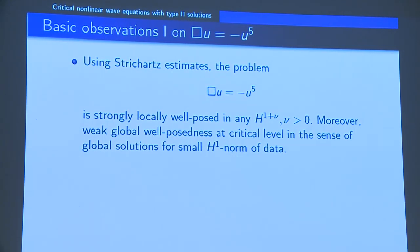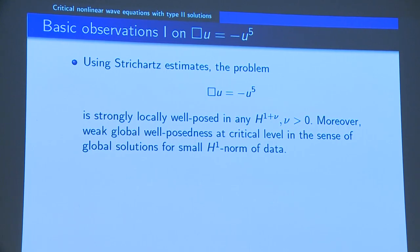More precisely, it is strongly well-posed in H^{1+} for any positive epsilon, in the sense that you can indicate a time interval whose length depends just on the norm. If you only work at the level of H^1, then the length of existence also depends on the profile of the initial data. So the equation is strongly well-posed in H^{1+}.